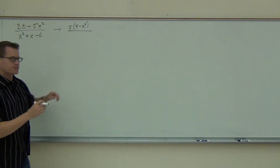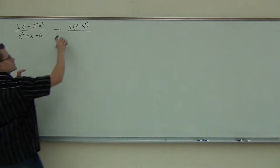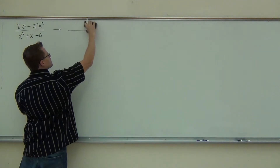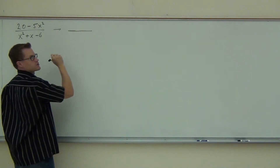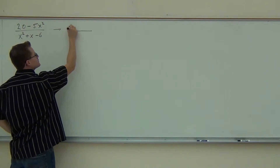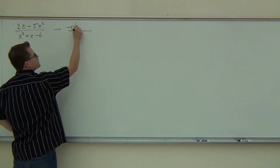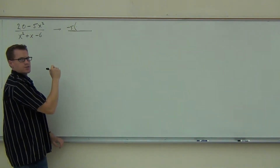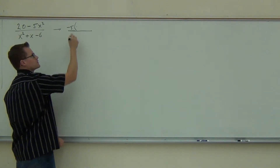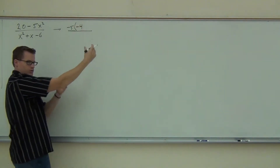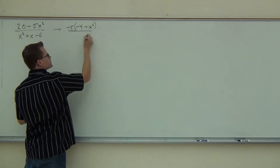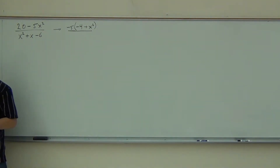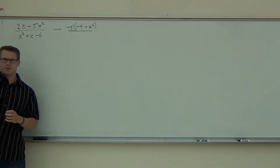But if you factor out the negative 5, check it out. If you factor out the negative 5, you get — instead of 4 — and you're going to get plus x squared. You factored the negative out of it; it changed both signs inside. How many people are with me on that step right there?